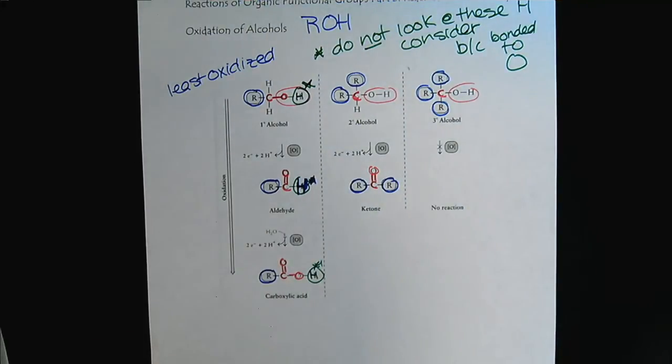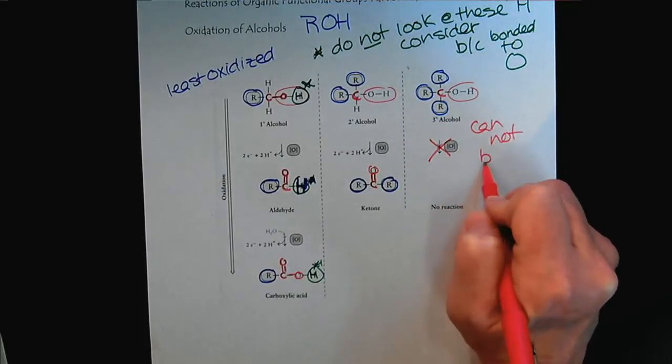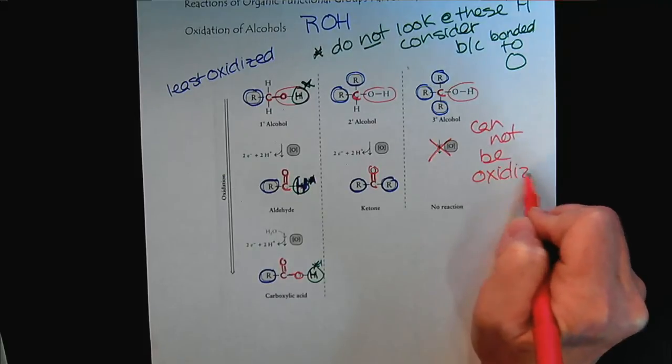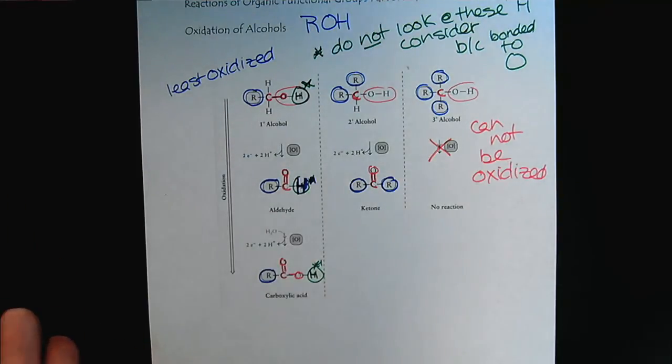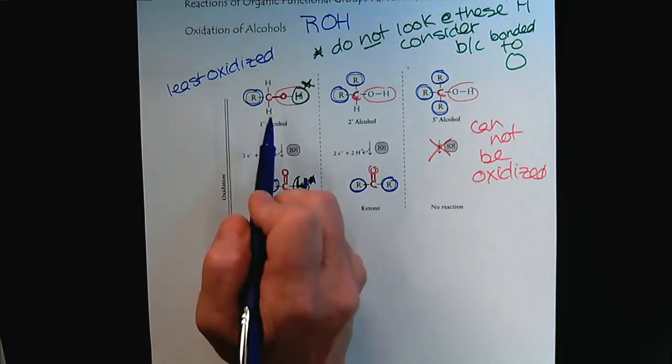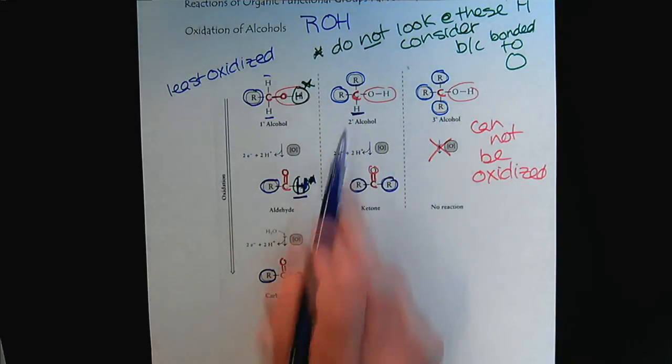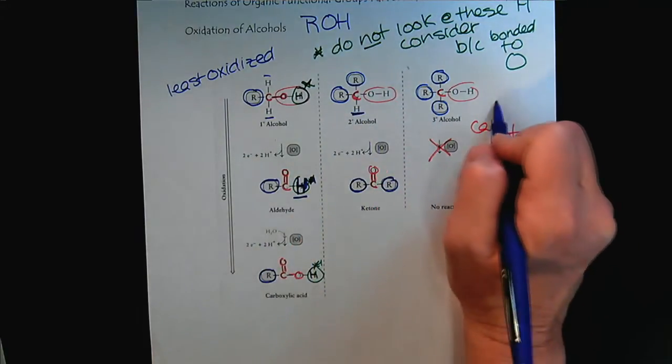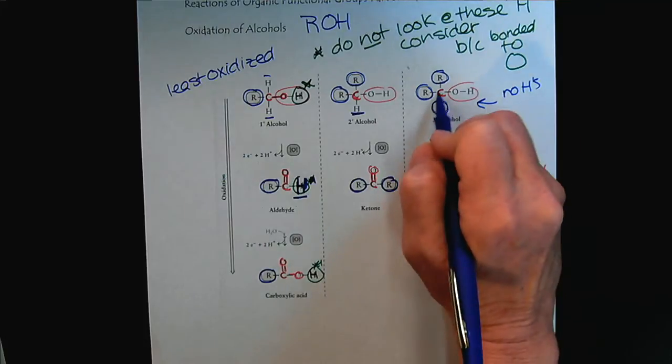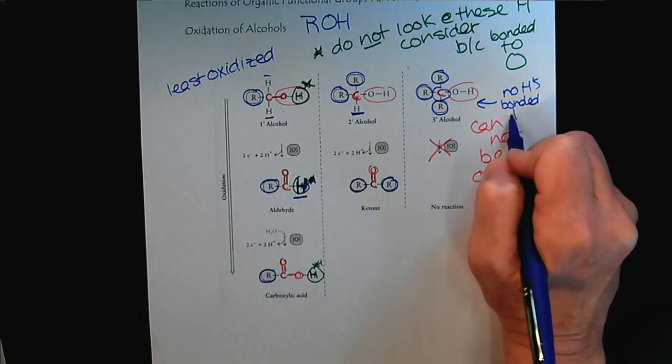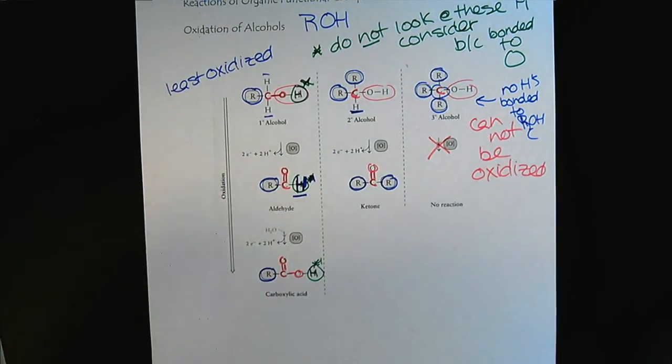And so finally, if we look at tertiary alcohols, based on that we can see that we cannot oxidize them. To oxidize the carbon, we have to be able to lose these hydrogens. Notice, as long as there's a hydrogen bonded to the carbon, it can be oxidized. But here, there are no hydrogens bonded to this carbon, to the alcohol carbon. That's a really important thing to understand.